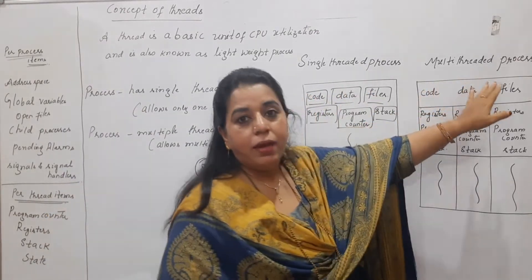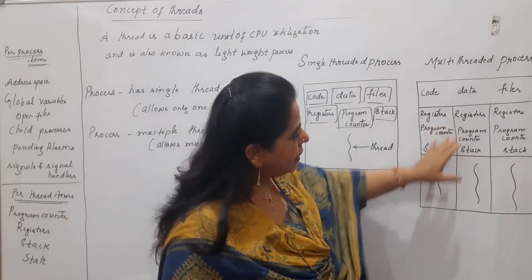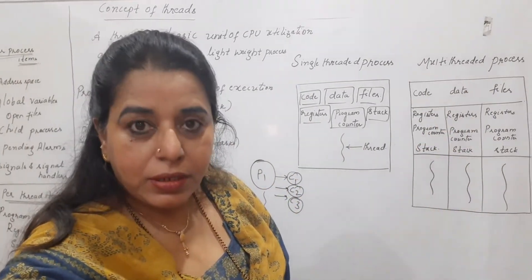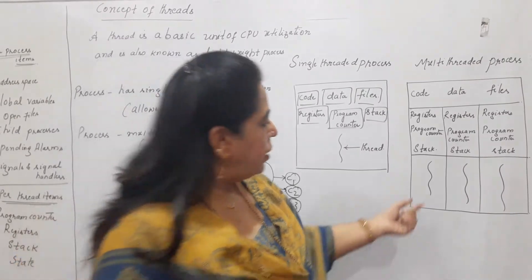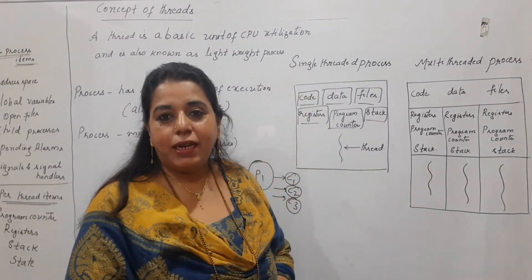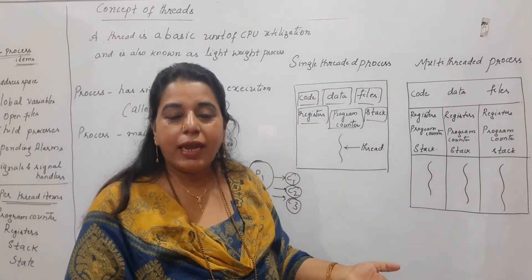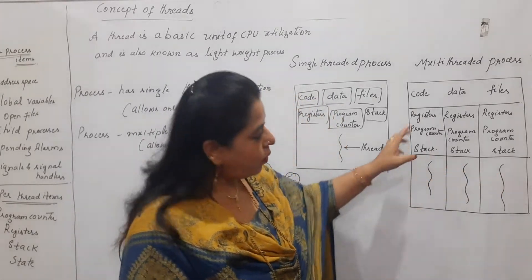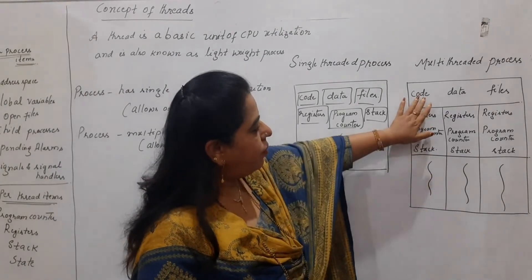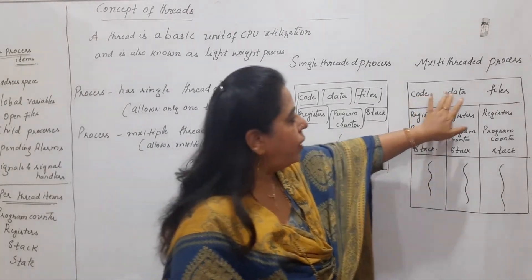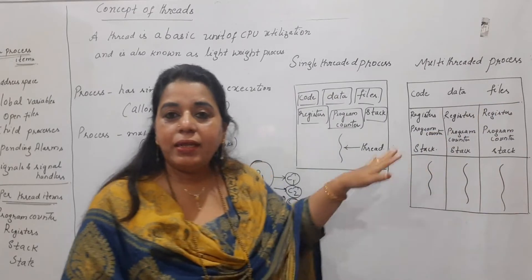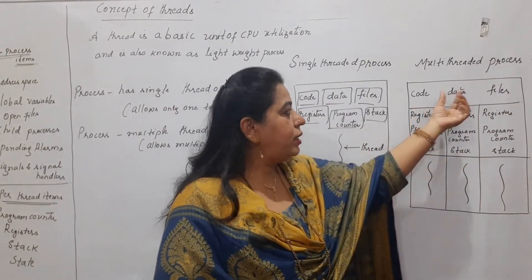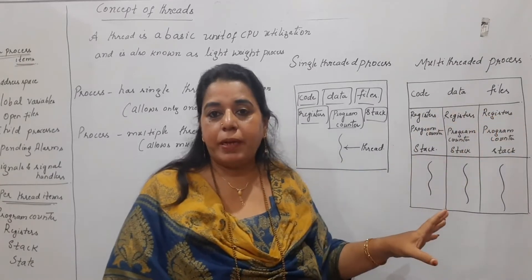Suppose if a process is having more than one thread — here in this example I have shown three different threads. Let me focus on that diagram. So these are the three different threads in a process. As I said, a process can have multiple threads. So here in this example there are three threads. But what you are observing is that a thread will always share the code, data, and files. All these three threads are trying to share the code section, the data section, and the files used by the process.